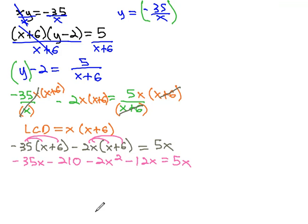Let's combine like terms and put things in order. We've got negative 35x and negative 12x. When we combine, let's put the x squared first: negative 2x squared, negative 47x minus 210 equals 5x.